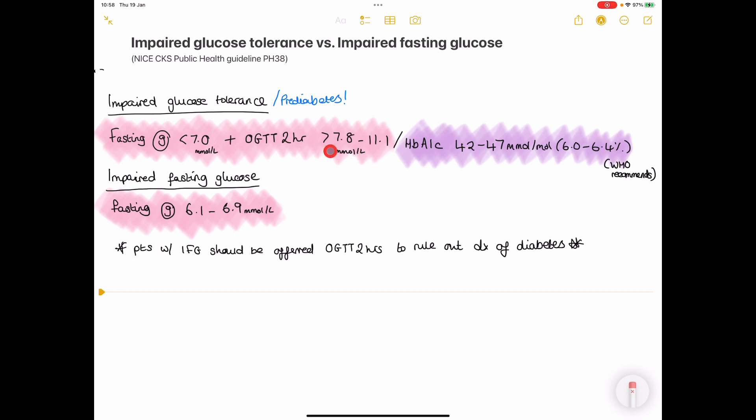However, if it is between 7.8 to 11.1, it's not diabetes but it's something that patients would understand better as pre-diabetes, or it's known in the literature as impaired glucose tolerance.